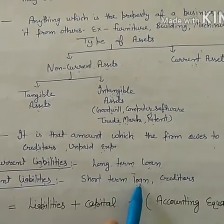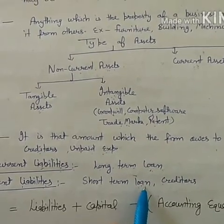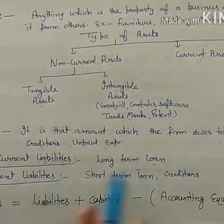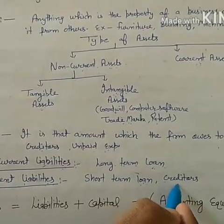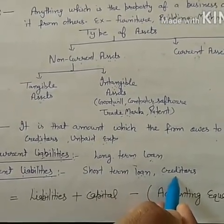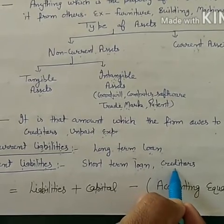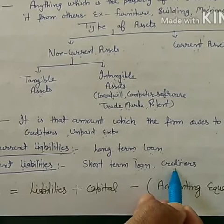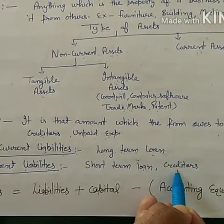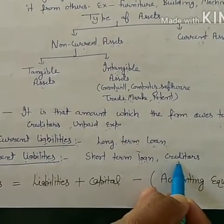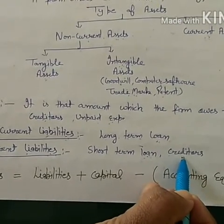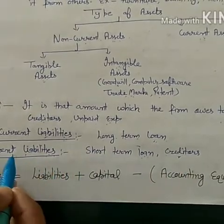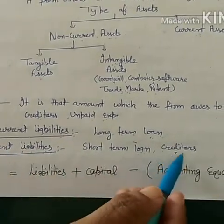A short-term loan taken for nine months or one year is known as a Current Liability. Creditors are those persons from whom the firm has purchased goods on credit. Since that payment must be made within one year, creditors are also known as Current Liabilities.